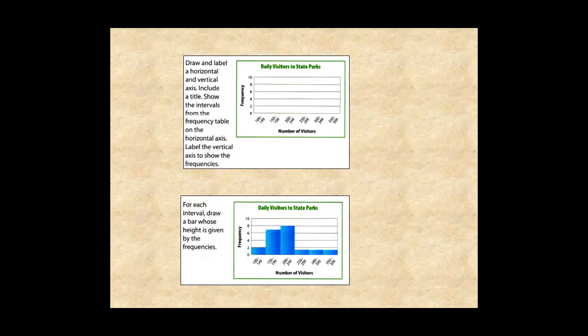For each interval, draw a bar whose height is given by the frequencies. For example, there are eight data values in the 200 to 250 unit interval. And with that, your histogram is complete.